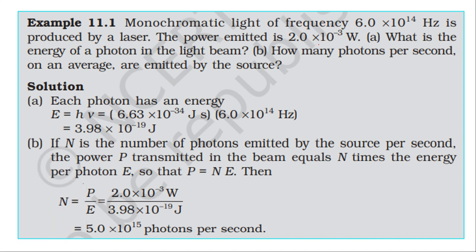Given: monochromatic light of frequency 6×10¹⁴ Hz, power emitted by the source is 2×10⁻³ watt. Part one — energy of each photon. Energy is equal to h-nu, where h is Planck's constant and nu is the frequency.